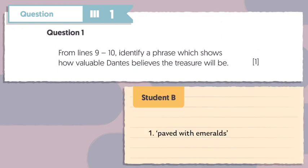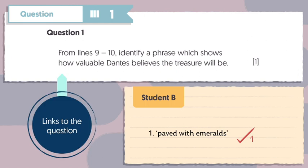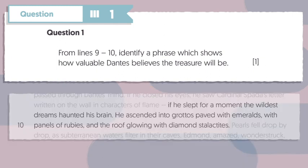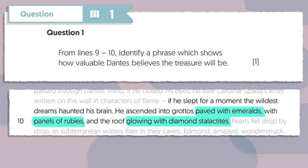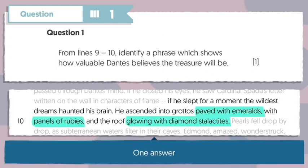Now let's look at Student B's response and see how it differs. In this case, the student has selected the phrase 'paved with emeralds.' They've clearly chosen a phrase that links to the question, so they've earned the mark. Emeralds are expensive, and this shows Dantes believes that the treasure will be valuable. In the text, there are a few phrases like this that the student could have chosen, but you only need to write one valid answer to get the mark.